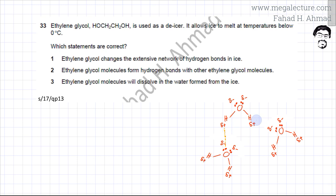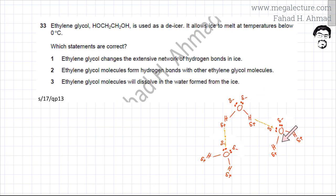The same is true for the other hydrogen as well — the partial positive hydrogen will be attracted to the lone pairs of this other water molecule, and these are hydrogen bonds. So there is going to be an extensive network of hydrogen bonds in ice. One water molecule will be attracting other water molecules, and those water molecules will be attracting further water molecules, so all the water molecules will be attracted to each other by these hydrogen bonds.